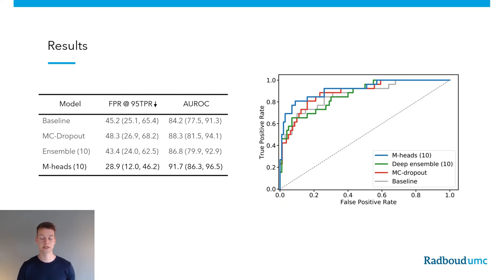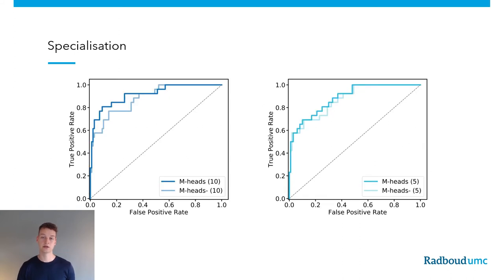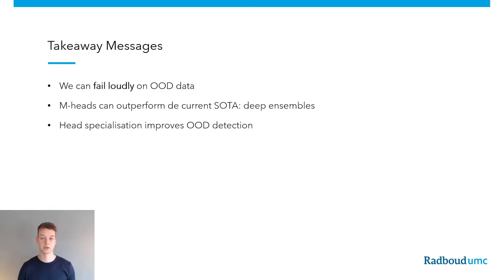We can then measure out-of-distribution detection performance by doing an ROC analysis on the uncertainty estimates. Here we compare the uncertainty estimates on cases from the test set versus the out-of-distribution lymphoma cases. Doing so, we see favorable results for the multi-head model, slightly out-competing the other baselines. We can also check the influence of training by distributing gradients for the multi-head model, comparing both training with and without distributing gradients for a model of both 5 or 10 heads. In both cases, we see improved out-of-distribution detection performance when distributing gradients, which shows the importance of this method.